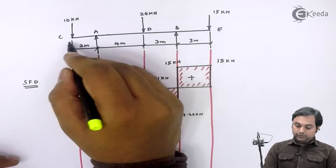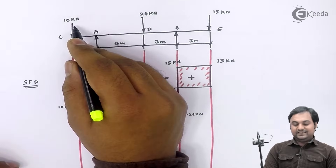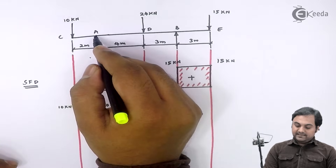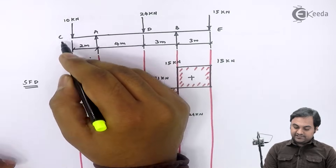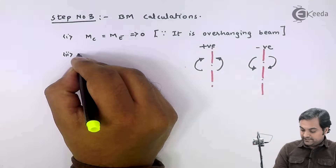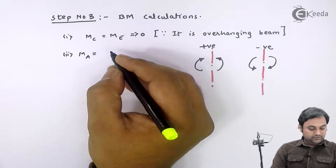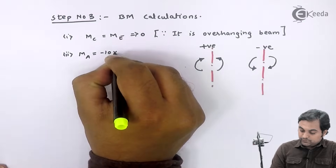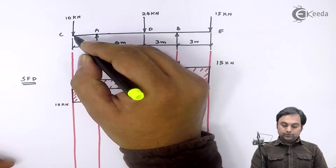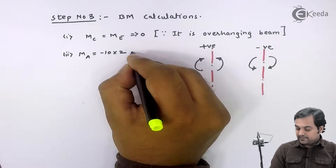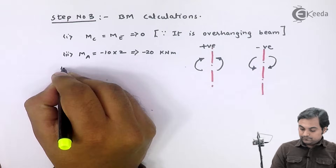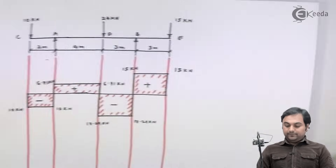Starting from point A — to the left of A I have only one force, which is 10 kN, producing an anti-clockwise moment. Anti-clockwise moment to the left is negative. So moment at A equals minus 10 into 2, because the force is 10 kN downward at a distance of 2 meters. That gives minus 20 kNm.